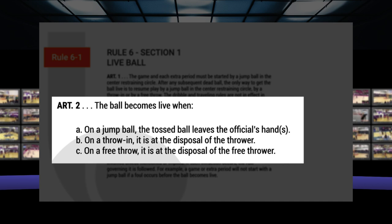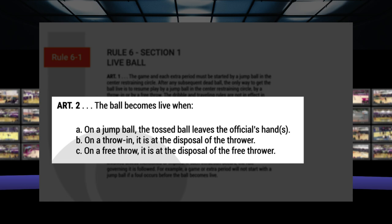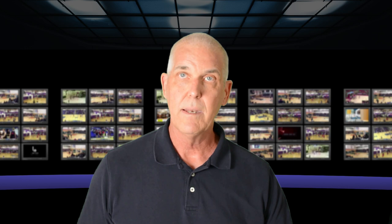When does the ball become live on a free throw? Let's take a look at Rule 6, live ball, Article 2. The ball becomes live when: on a jump ball, when the tossed ball leaves the official's hand; on a throw-in, it is at the disposal of the thrower; or on a free throw, it is at the disposal of the free thrower. So the ball becomes live when it's at the disposal of the free thrower. Is the ball at their disposal in our play scenario? We can answer this if we refer back to Rule 4, Section 4, ball location at the disposal. At the disposal is defined in Rule 4, Article 7.